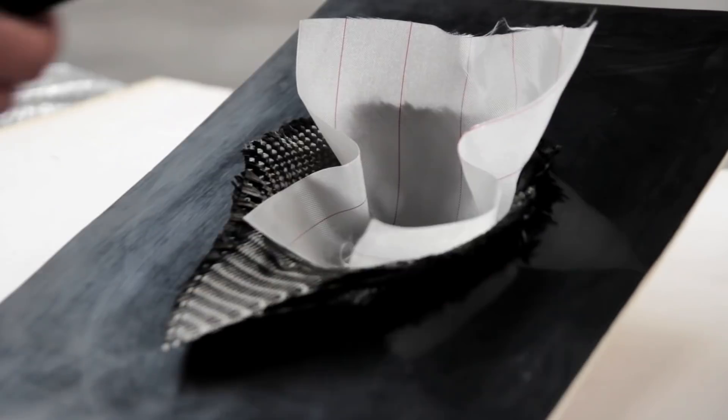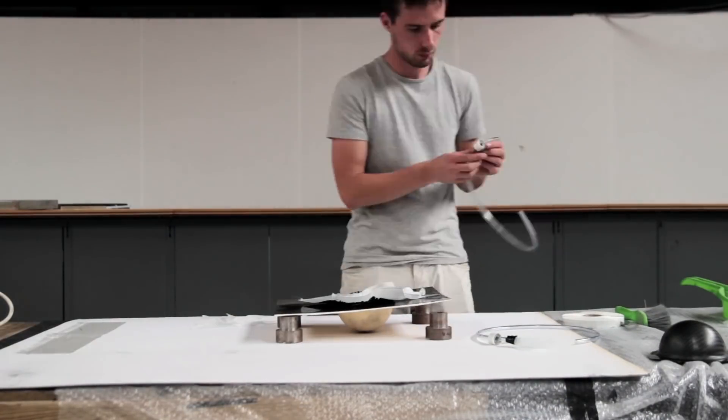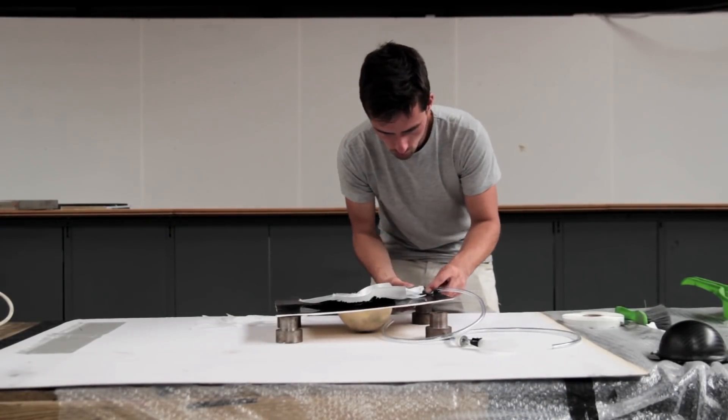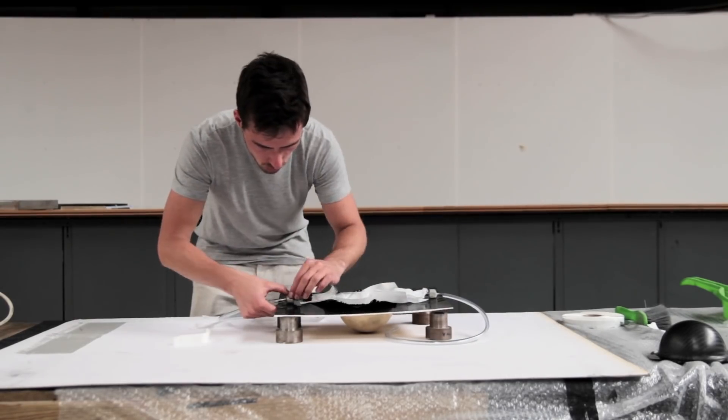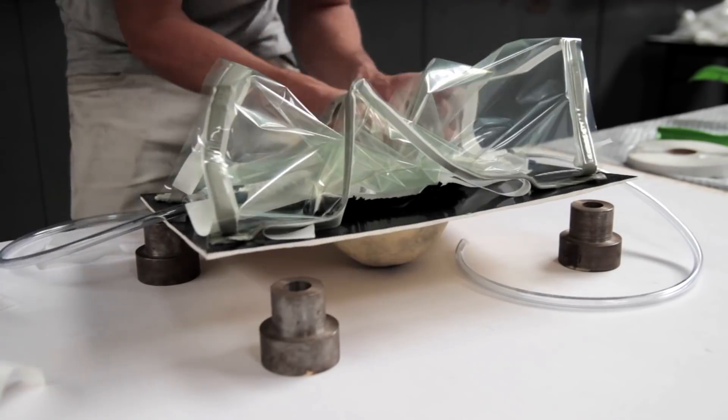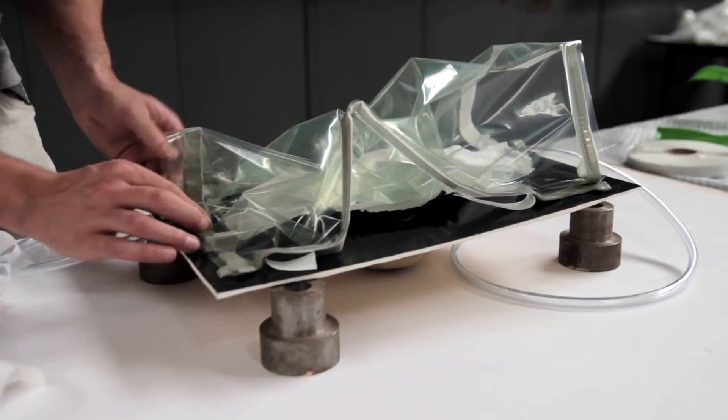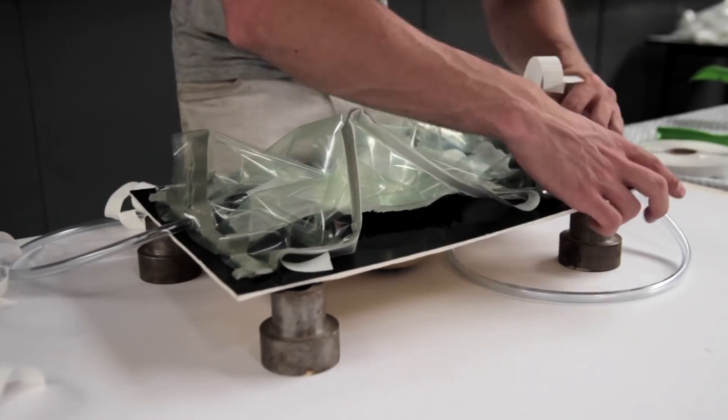This is how carbon fiber pieces are made. It's just like a cloth, it goes into a mold. Then you have some peel ply and fusion mesh. Everything goes under vacuum and then you get a strong carbon fiber piece. I went for full carbon fiber because I work with this material daily and I think it's the best way to make a nice Pokeball.